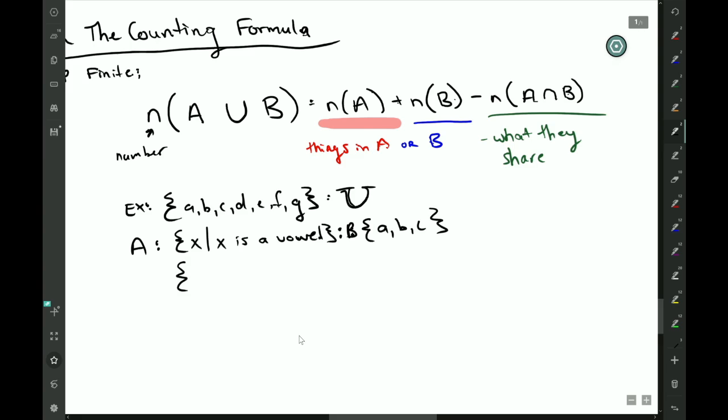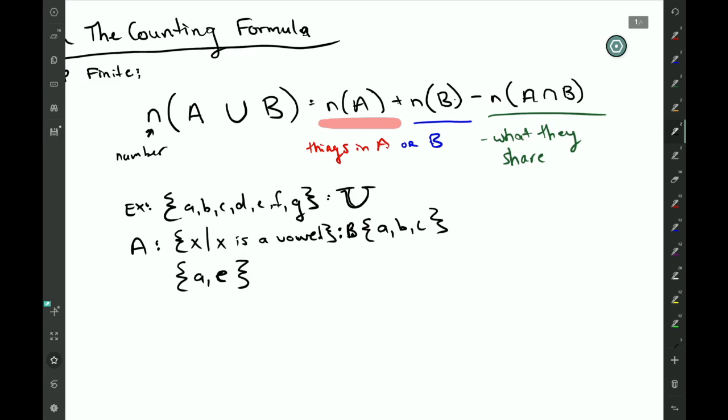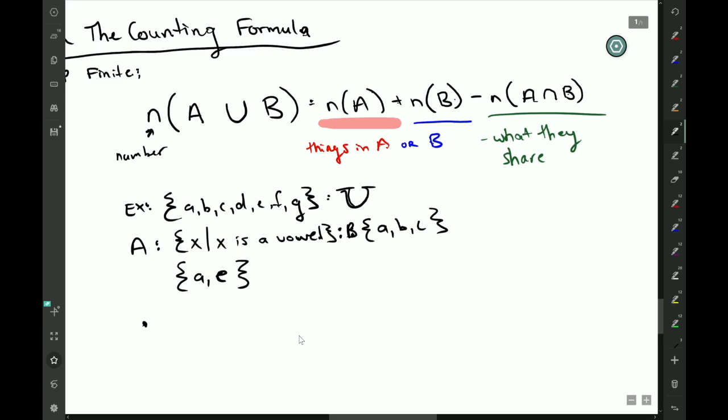X such that X is a vowel is a, e, i, o, u—which I don't go there—so it's just a and e. Now if I want to know the intersection, the number of things in A union B.